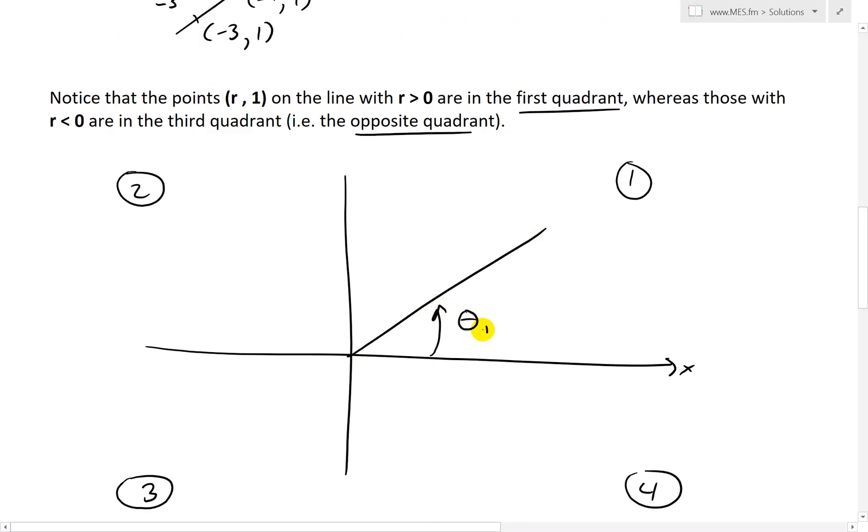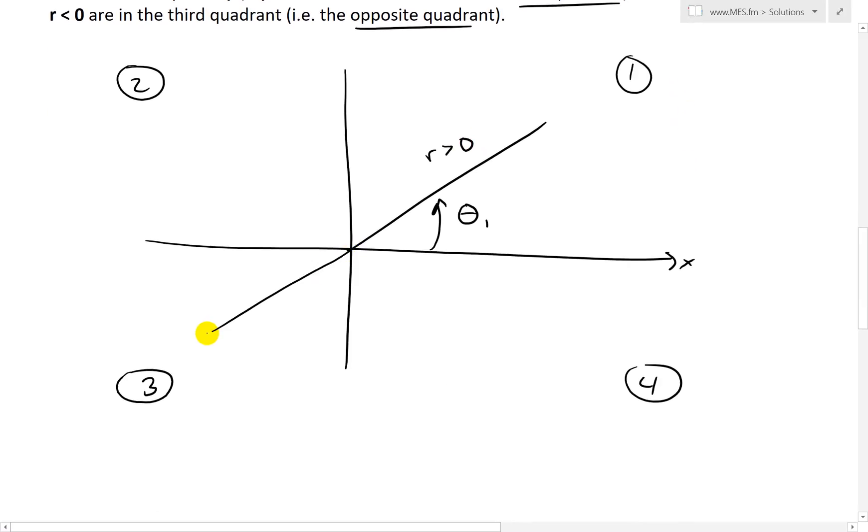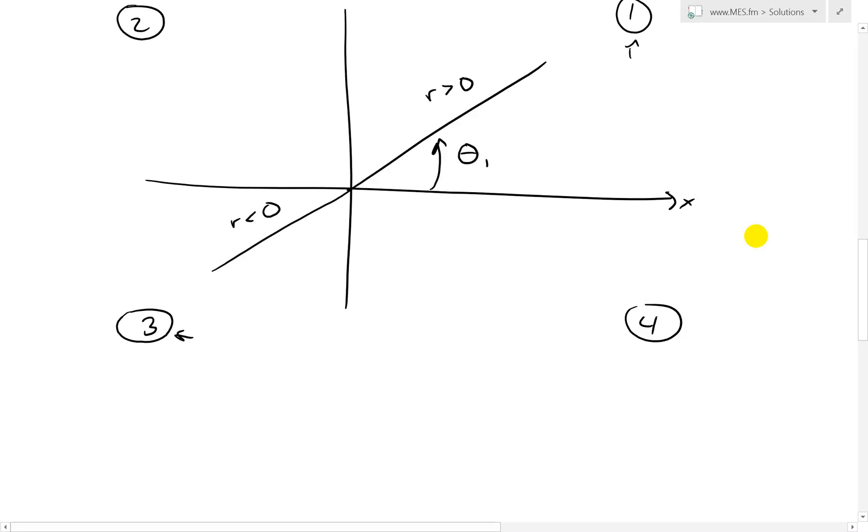So if we had an angle like this, so this is theta 1, and this is r is greater than 0. So then when we have r is less than 0, we go to the third quadrant. So we have 1 all the way to 3. And this is pretty much a basic, obvious observation.